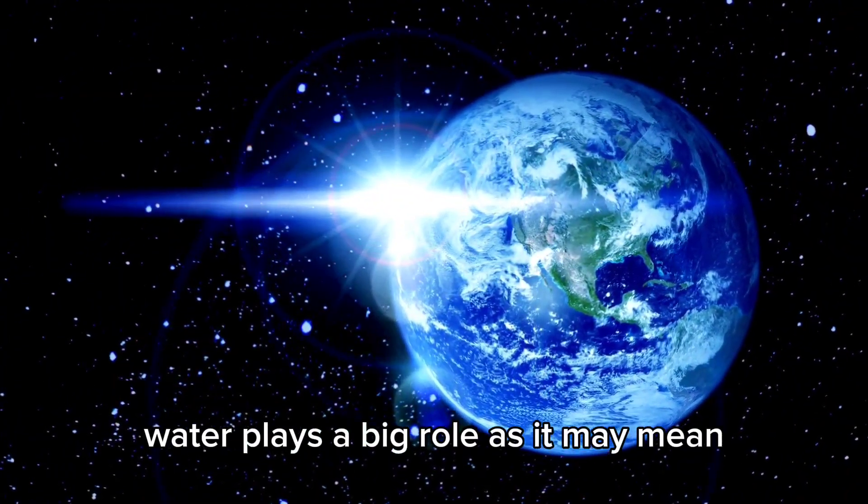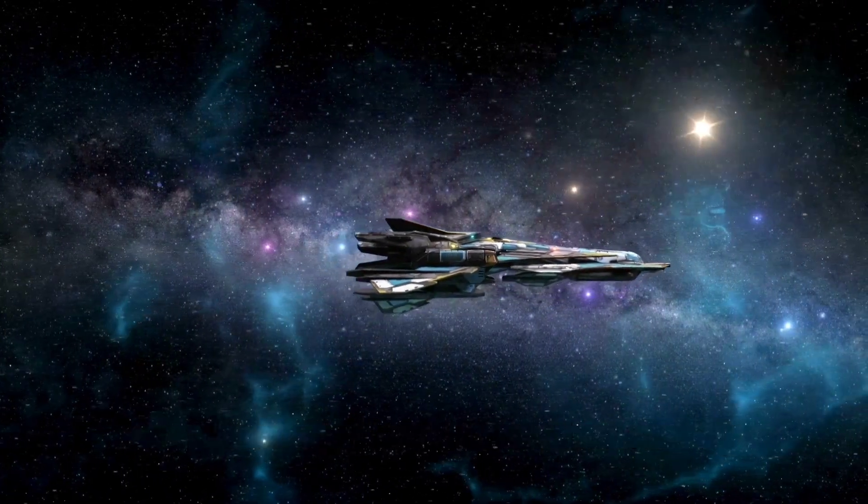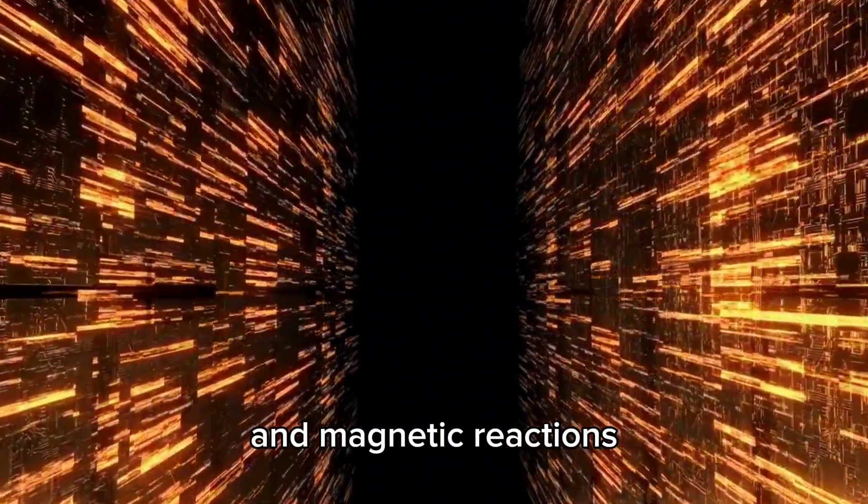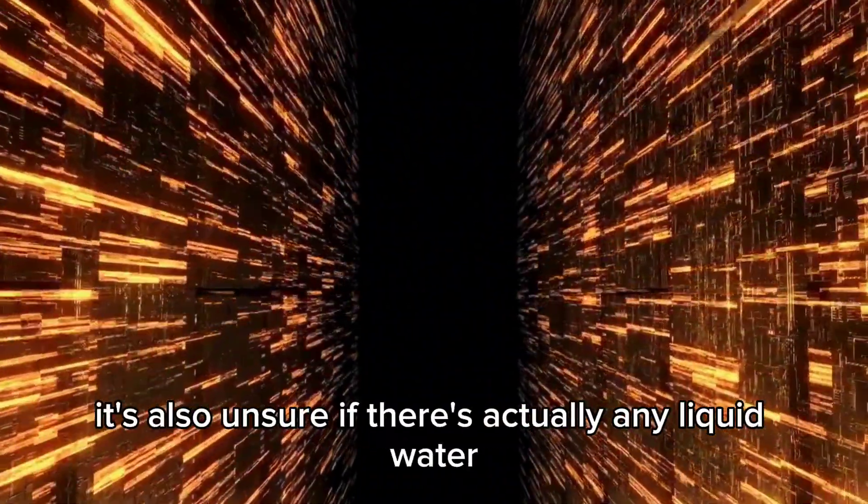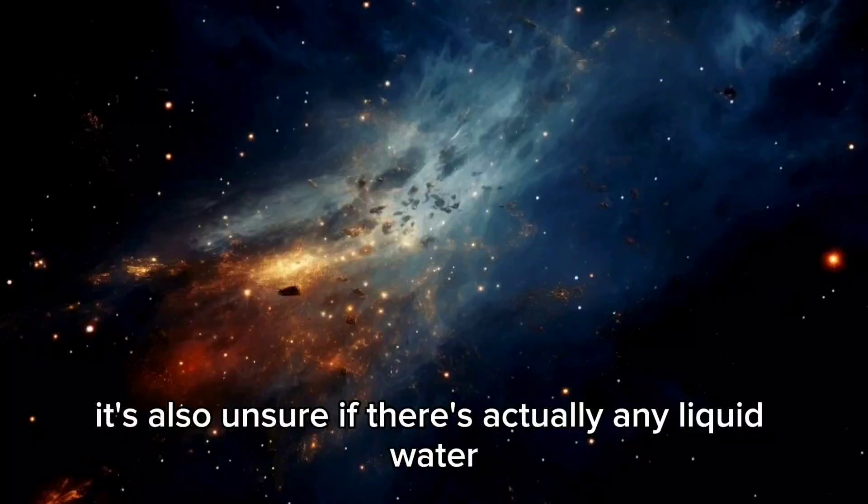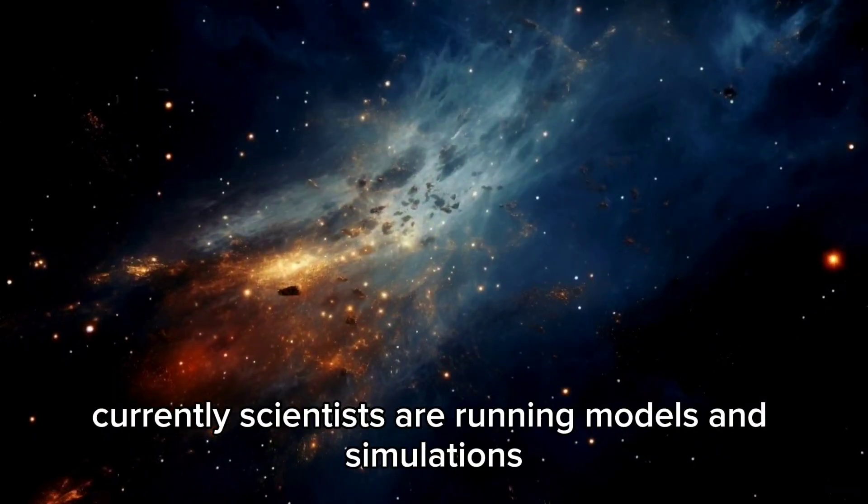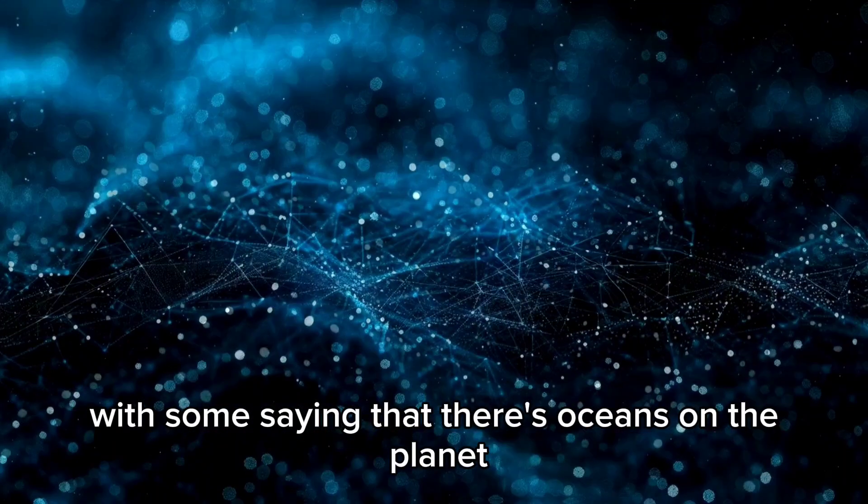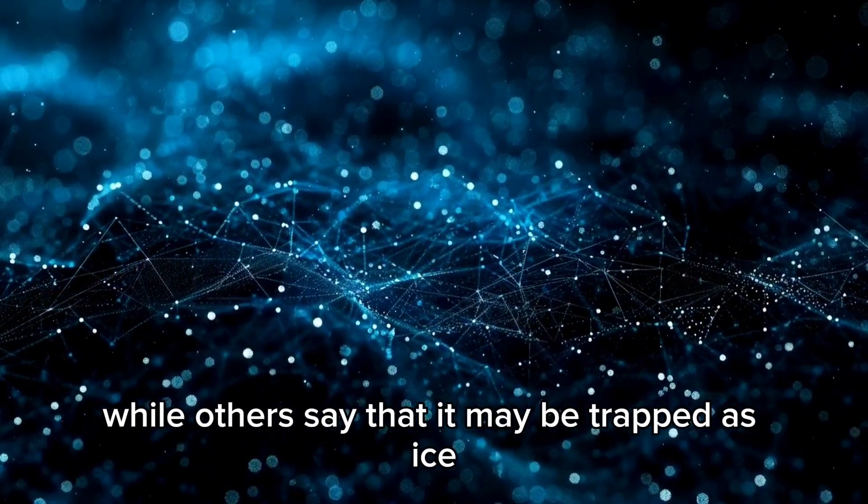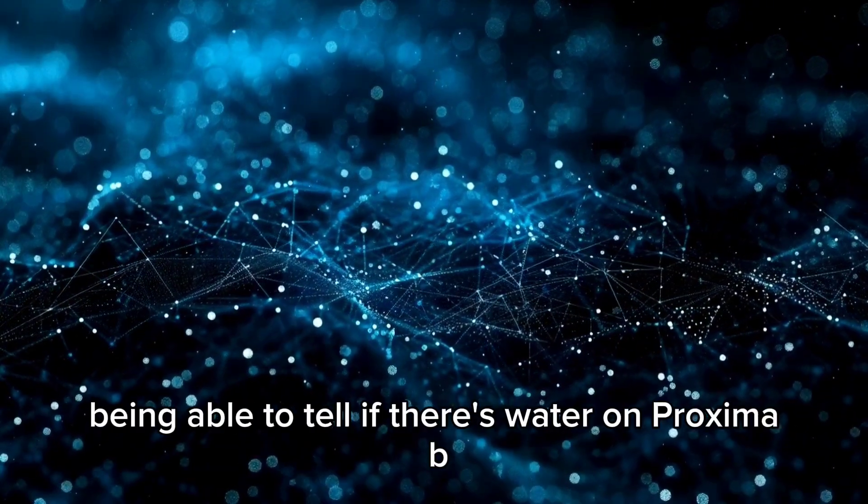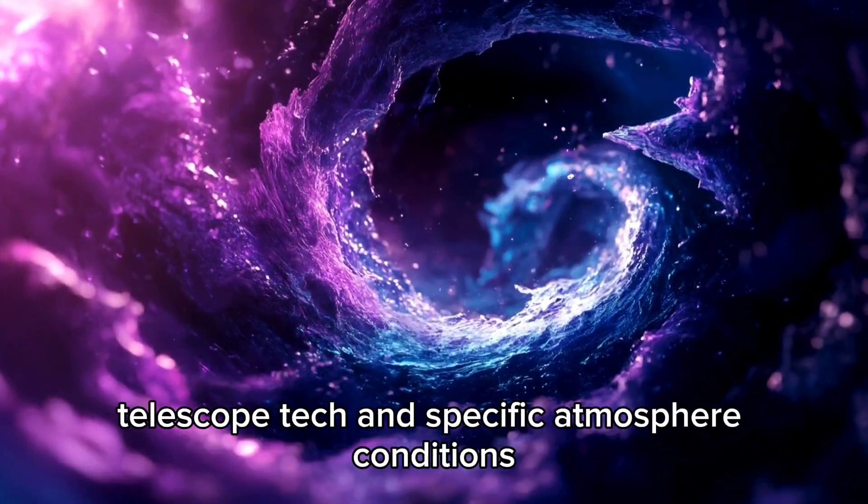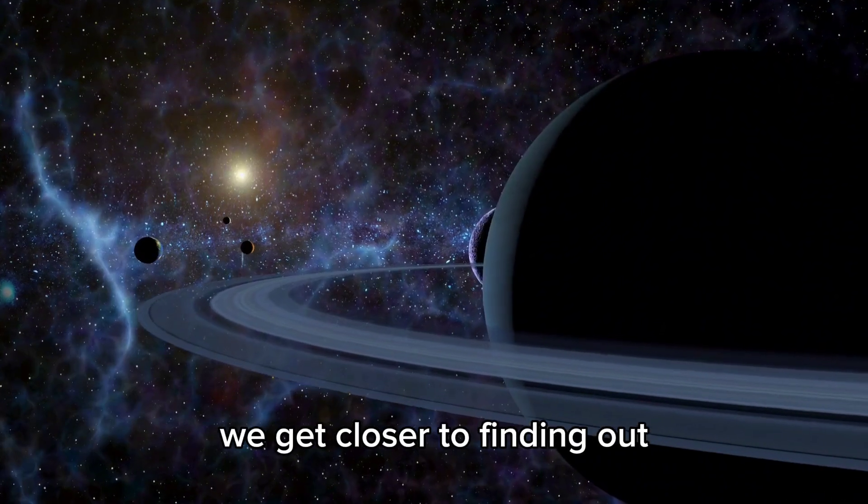Water plays a big role as it may mean the planet could hold biological activity. Since it's near its red dwarf star, the planet gets a lot of radiation and magnetic reactions which could mess up any atmosphere. It's also unsure if there's actually any liquid water. Currently, scientists are running models and simulations to check different cases for water reservoirs, with some saying there are oceans on the planet, while others say it may be trapped as ice or under the surface. Hopefully, as our abilities grow, we get closer to finding out.